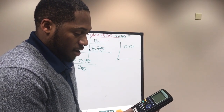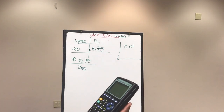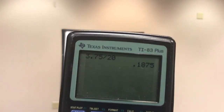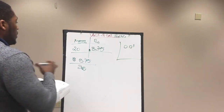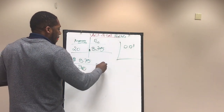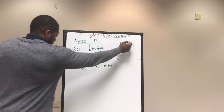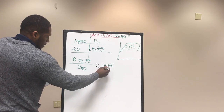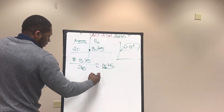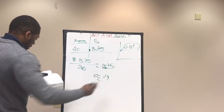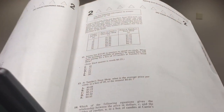So we do 3.75 divided by 20. Let me show you this. In the calculator we get 0.1875. To the nearest hundredth, we take the first two decimal digits and round the second one: the digit after is 7, which rounds 8 up, giving us 0.19. And the answer choice is B, 0.19.